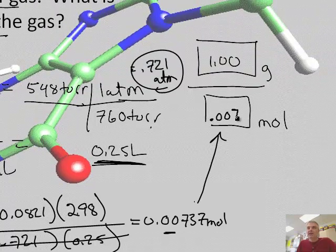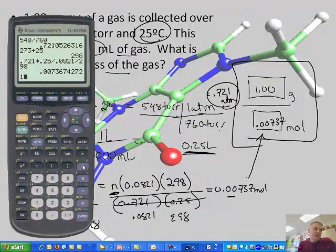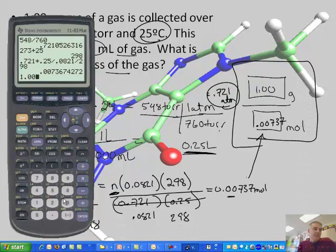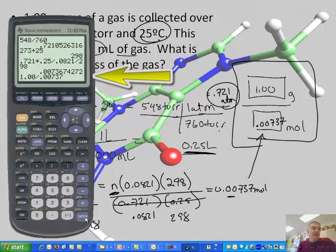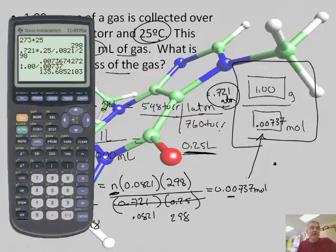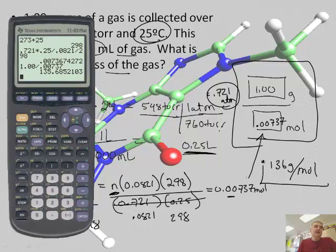So that number is 0.00737. So now I'm going to take this, divide by this, and I'm going to have my answer. So I'm going to take 1.00 technically. It's really just 1, really. Well, but it is a significant digit. Divide by 0.00737, and I get the molar mass is, look at the calculator, 136 grams in 1 mole. So that is the answer to this example.